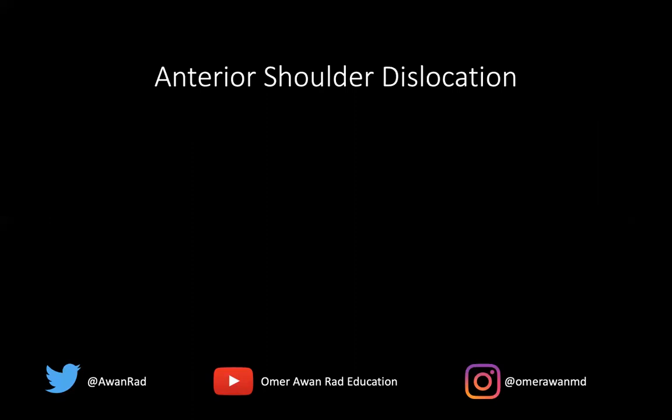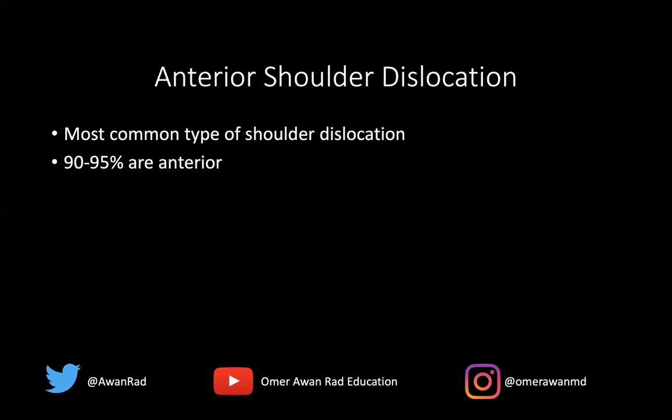I want to discuss this because usually you're used to seeing this on a plain film, but I wanted to show it on an MRI to challenge you and show what the characteristic findings are. This is the most common type of shoulder dislocation — 90% to 95% of shoulder dislocations are anterior glenohumeral joint dislocations, usually a result of trauma. 5% to 10% are posterior and those happen from seizure histories or electroconvulsive therapy, not always related to trauma.